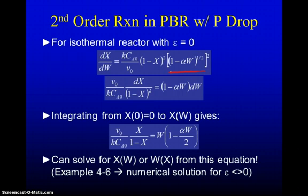Now we have a differential equation for X as a function of weight of catalyst that depends on X in one term and W in another term. Those variables can be separated from each other. We end up with DX over 1 minus X squared on one side of the equation and 1 minus alpha W DW on the other side. If we integrate this from the conversion being 0 at W being equal to 0, then we end up with this expression. We actually do have a solvable form of the differential equation for an isothermal reaction with no volume change when it's second order and it happens in a packed bed reactor.